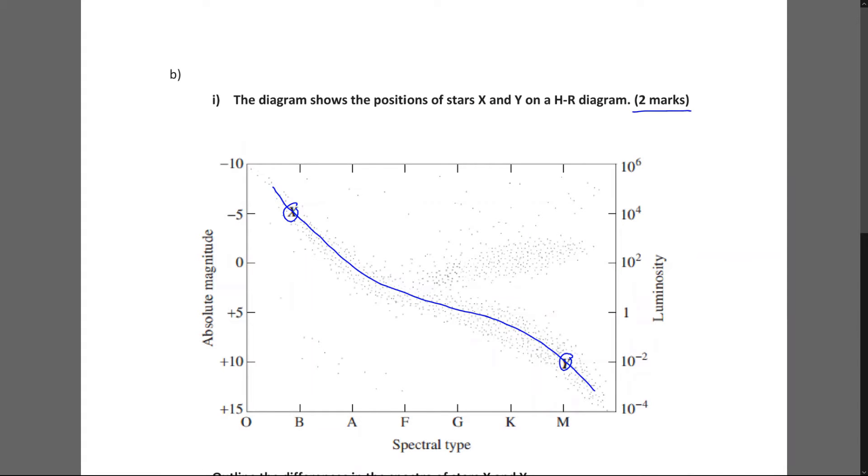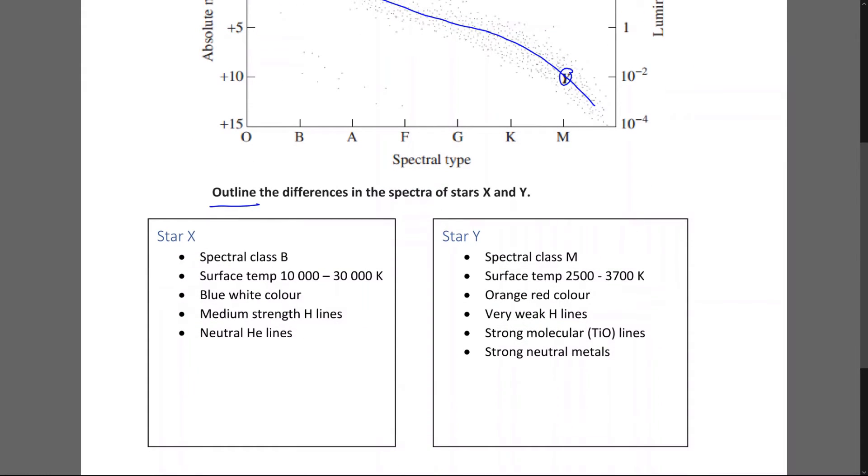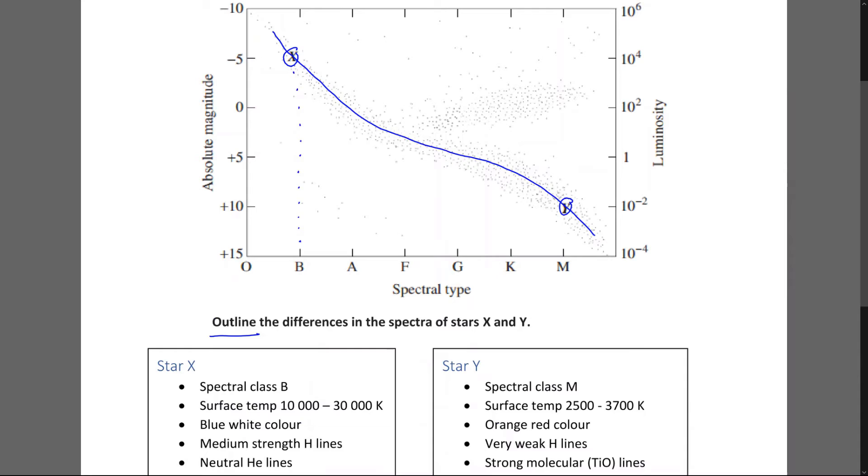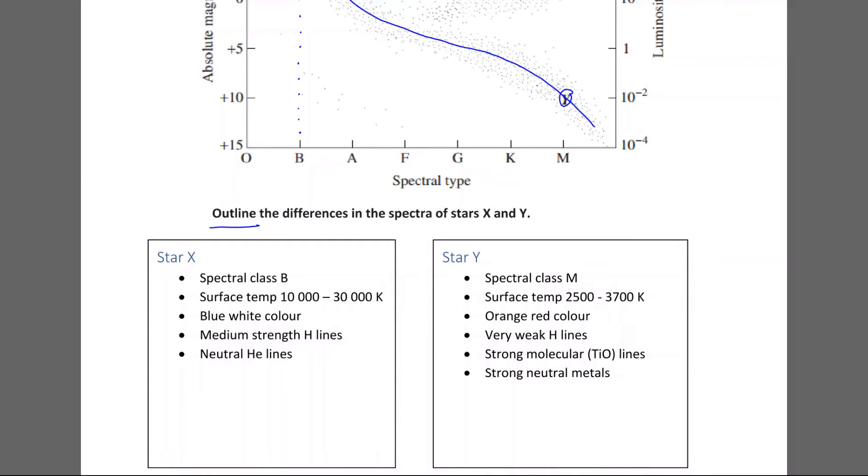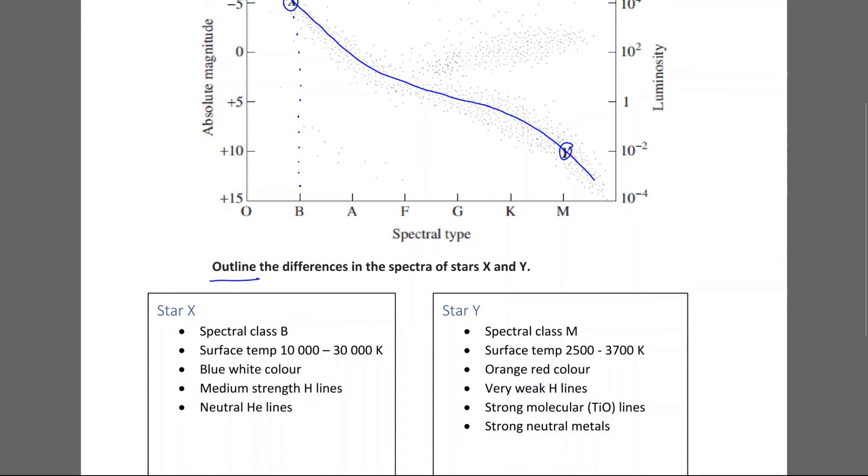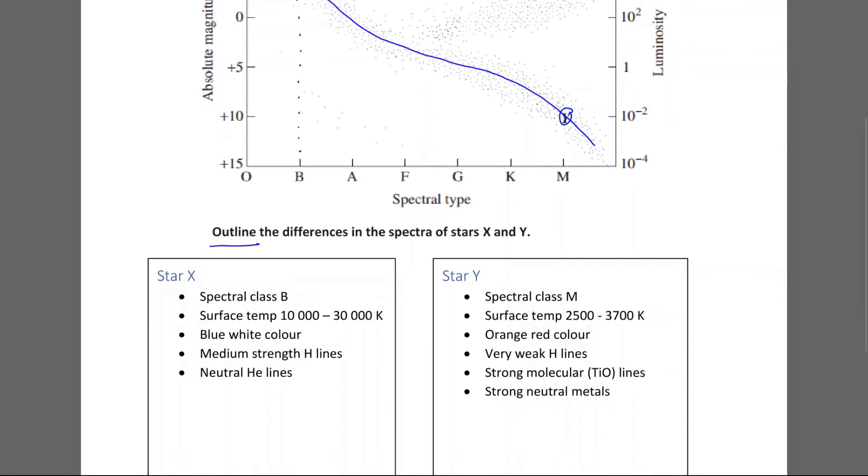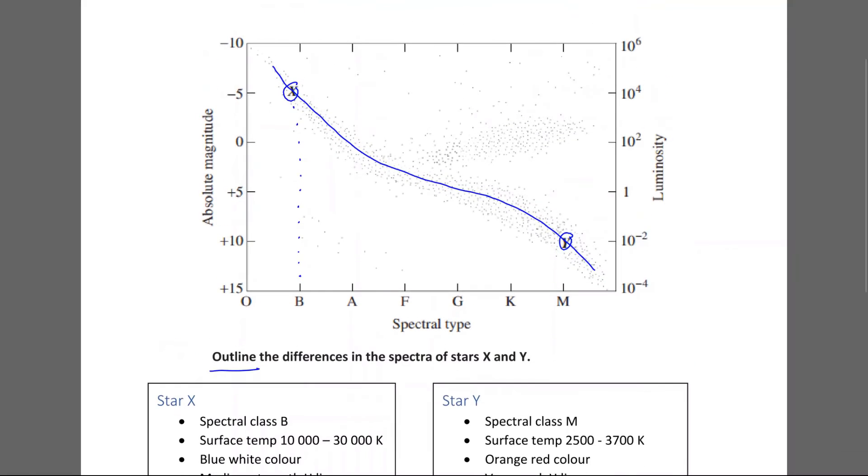So that's all we have to do. We just have to outline the differences of the spectra in stars X and Y. And we see it's a two mark question. So there's not much to it. It can be pretty brief about it. So I've summarized the data here. So star X, we can see that it's in line with spectral class B. So we see it's spectral class B. And then we can immediately check its data based on that. It is spectral class B, which means its surface temperature is between 10,000 and 30,000 Kelvin. It will be a blue-white colour. It will have some medium strength hydrogen lines. And it will have neutral helium lines.